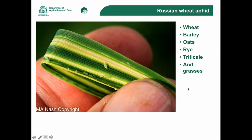Here's one picture of the symptoms caused by the Russian wheat aphid — you can see some nymphs there. Firstly, you can see that it's quite a slender aphid, and it's a little bit smaller than the oat and corn aphid as well. This picture came from Michael Nash in South Australia. You can see the symptoms actually look a lot like wheat streak mosaic virus. Symptoms are one thing we can use as an indicator, but with early infestations these symptoms will be less pronounced.